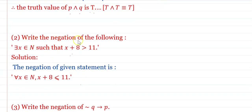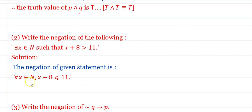Write the negation of the following: 'There exists x belonging to the set of natural numbers such that x + 8 > 11.' The negation is: 'For every x belonging to the set of natural numbers, x + 8 ≤ 11.'